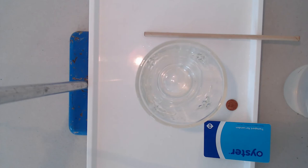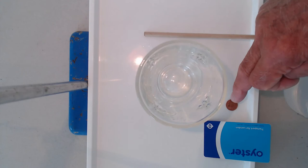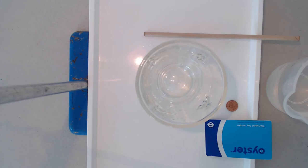This is the final experiment in this short set of demonstrations about the surface tension of water. For this one I need a drinking glass, a straw, a small coin, a plastic card and a supply of clean tap water.